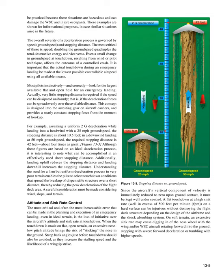The overall severity of a deceleration process is governed by speed (ground speed) and stopping distance. The most critical is speed — doubling the ground speed quadruples the total destructive energy and vice versa. Even a small change in ground speed at touchdown, resulting from wind or pilot technique, affects the outcome of a controlled crash. It is important that the actual touchdown during an emergency landing be made at the lowest possible controllable airspeed using all available means. Most pilots instinctively look for the largest available flat open field for an emergency landing. Actually, very little stopping distance is required if the speed can be dissipated uniformly.